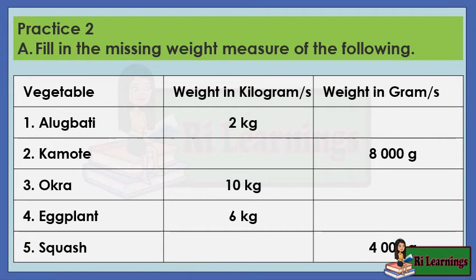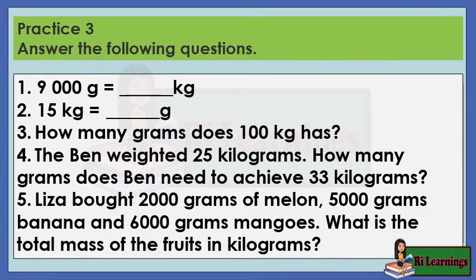Practice 2A — Fill in the missing weight measure. Practice 3 — Answer the following questions. 1. 9,000 grams equals how many kilograms? 2. 15 kilograms equals how many grams? 3. How many grams does 100 kilograms have? 4. Ben weighs 25 kilograms — how many grams does Ben need to reach 33 kilograms? 5. Liza bought 2,000 grams of melon, 5,000 grams of banana, and 6,000 grams of mangoes. What is the total mass of the fruits in kilograms?